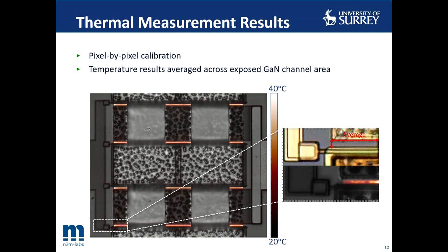Here we have a thermal image showing the areas used to extract the temperature results. They were obtained by performing a pixel-by-pixel calibration, which allows accurate extraction of the temperature in the channel regions between the gate and drain metals. The temperature results shown in the next slides were averaged across all pixels in the exposed gallium nitride channel regions.